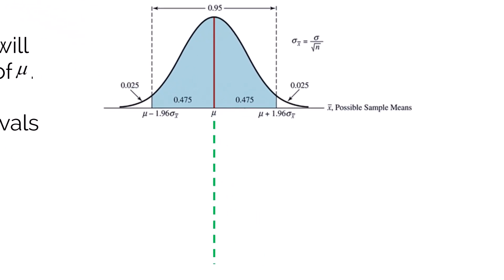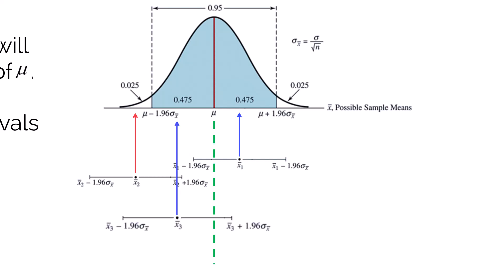Let's look at some different confidence intervals. In the first example, with a particular sample mean and interval width, the true population mean falls within the interval. In the second sample, the point estimate is so far to the left that the interval does not include the true population mean — it falls outside the 95% confidence interval. In the third and fourth samples, the point estimates fall in the shaded region and capture the true population mean. We can keep repeating this: 95% of intervals will include the true population mean, and 5% will fall outside in the two tails, giving 0.025 on either side.